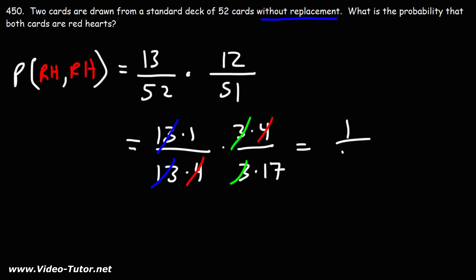So, the answer is 1 out of 17. There's a 1 out of 17 chance that both cards will be red hearts if we select them without replacement.